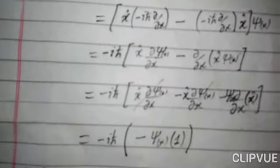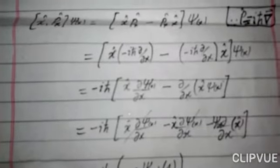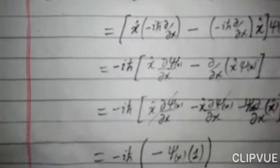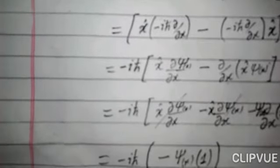So we have the x operator as it is, and px is what we have written: minus iota h-bar partial over partial x. We expand: minus iota h-bar times x operator partial psi of x over partial x, minus partial over partial x into x operator psi of x function. Now you can see that x operator and psi of x function are both dependent on x.